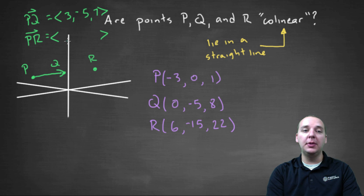Now for vector PR: terminal minus initial gives six minus negative three, which is nine. Negative fifteen minus zero is negative fifteen, and twenty-two minus one is twenty-one. So PR = <9, -15, 21>.